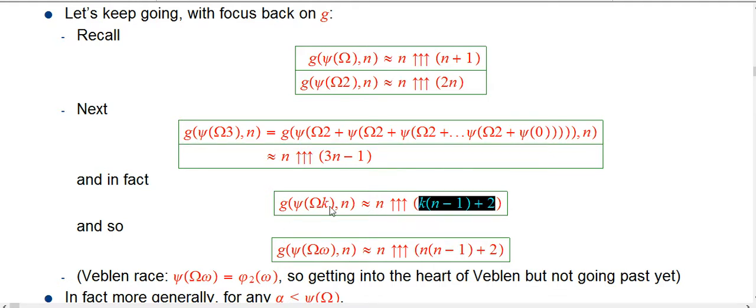And then, of course, one easy thing to do is put in the first limit ordinal here. By definition, if you've got a limit ordinal here, as long as it's a limit ordinal that is of countable cofinality, something that actually has a fundamental sequence leading up to it, well, omega certainly does. Fundamental sequence for that is just 1, 2, 3, 4, etc. Then it's very easy to do that.